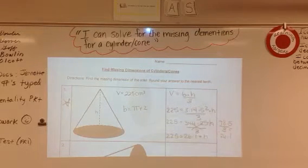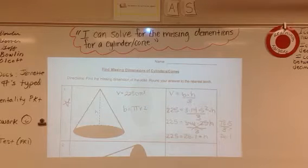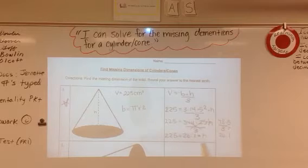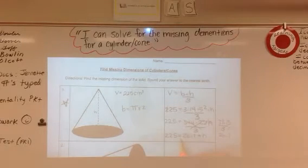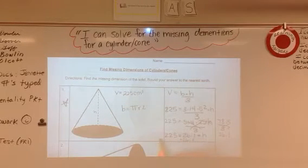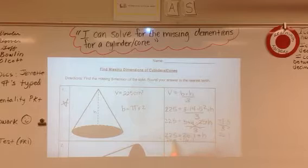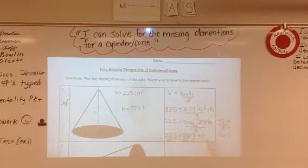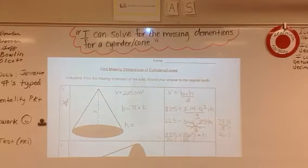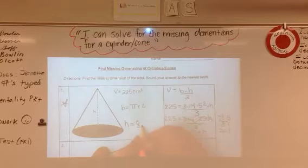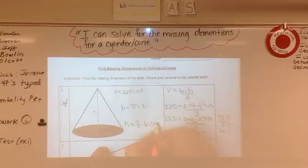Now we have to get h by itself because we're trying to figure out the height. So how I would do that is, since we're multiplying here, I'm going to divide. So I divide by 26.1, divide by 26.1. These would cancel out. I'm left with h.